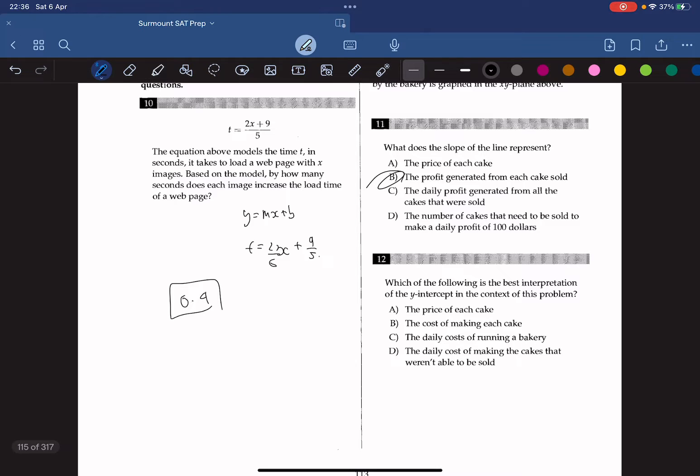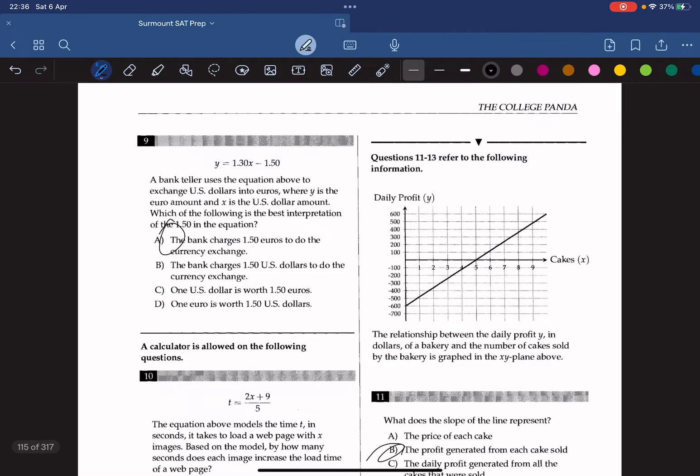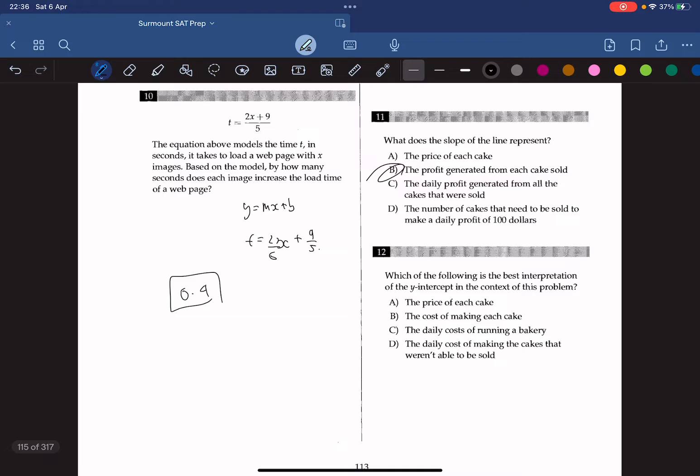Which of the following is the best interpretation of the y-intercept in the context of this problem? We can see here that the y-intercept is negative. So it's the bakery's profit when no cakes are sold. Therefore, they're losing money when no cakes are sold. Anything that has to do with the number of cakes sold should be incorrect. D is incorrect because the cost of the cakes does not depend on how many cakes the bakery did sell. So the answer here should be C, because the y-intercept is the cost of running the bakery, which leads to when no cakes are sold. So the answer is C.